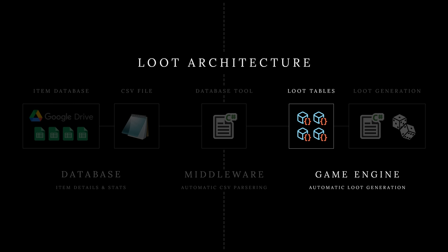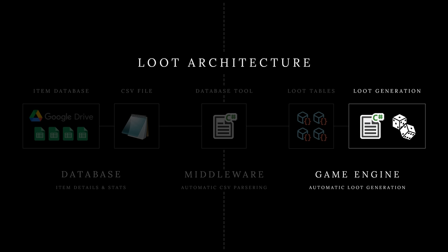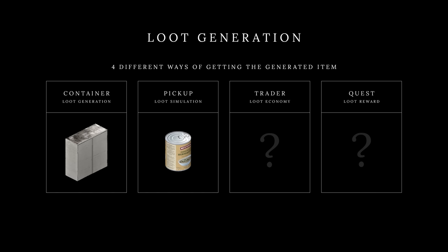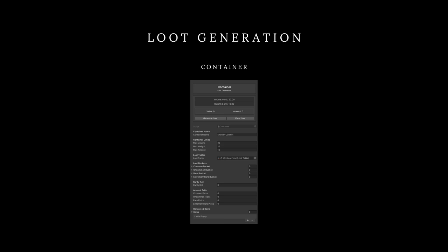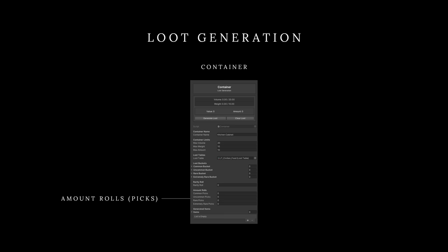The last phase of loot architecture deals with the generation of individual items. There are basically four different ways in the game to get a single generated item, each using its own specific loot system. This episode covers the container and pickup based systems. For the container based loot generation system, key elements include the generation type, container stats, container name, container limits, loot tables, loot buckets, a rarity roll, and amount rolls. The civilian loot table is already pre-configured, so we are ready to generate and roll the dice.